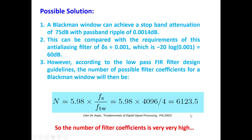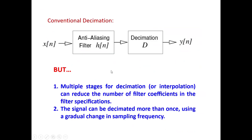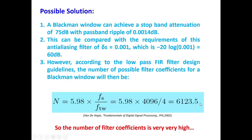So what is the solution? The solution is multi-stage decimation. Looking at conventional decimation: the signal X(N) passes through an anti-aliasing filter and then through a decimator to get the output. But we have already seen the problem — the direct implementation requires a huge number of filter coefficients, 6124.